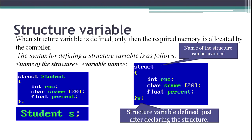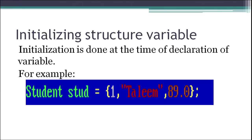After declaring a structure, we need to define or initialize the structure variable. If we want to initialize it with some values, we do so at the time of declaration. For example, for structure student and variable stud, we provide three values: one for roll number, one for s_name, and 89.0 for percentage. All these values are provided within curly braces followed by a semicolon.